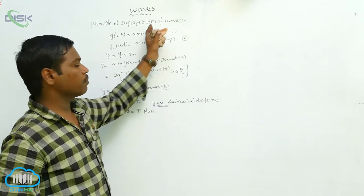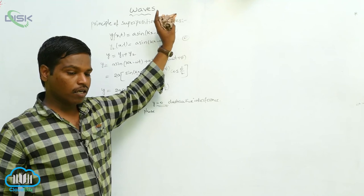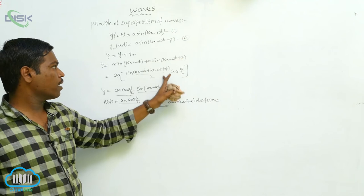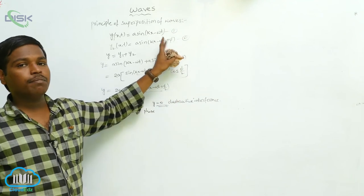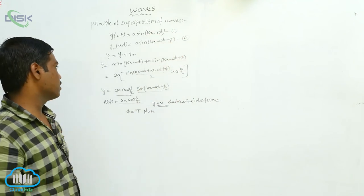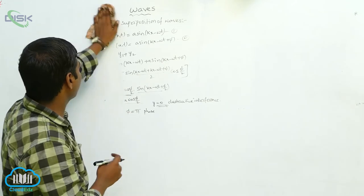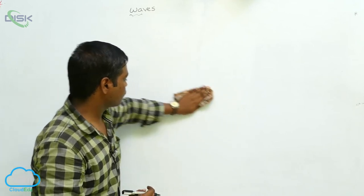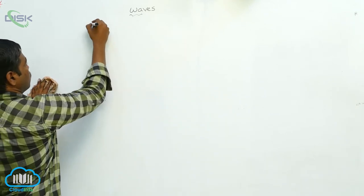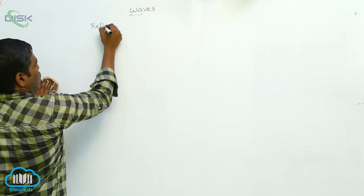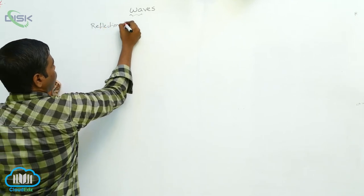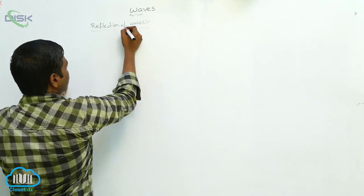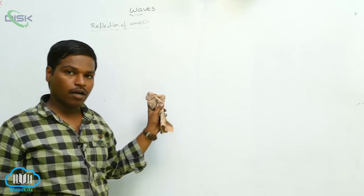This is the principle of superposition of waves: when two or more waves are traveling in a medium, the resultant displacement is the algebraic sum of the displacements. Now, reflection of waves. In reflection of waves, it is the same as regular reflection.